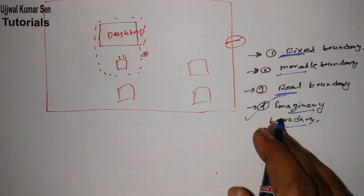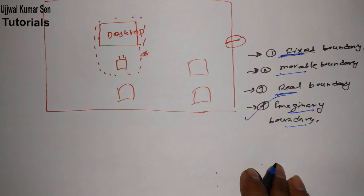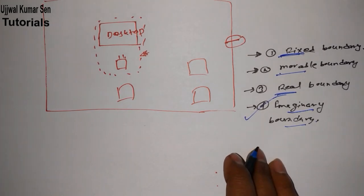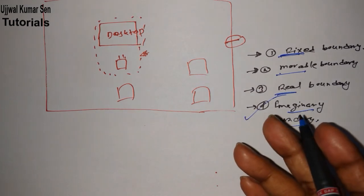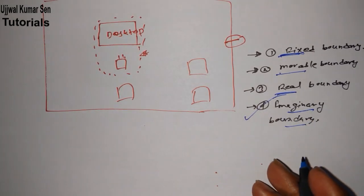Movable boundary — suppose that you have built a wall using asbestos or any other material, but that wall can be moved from one place to another. That is known as a movable boundary.